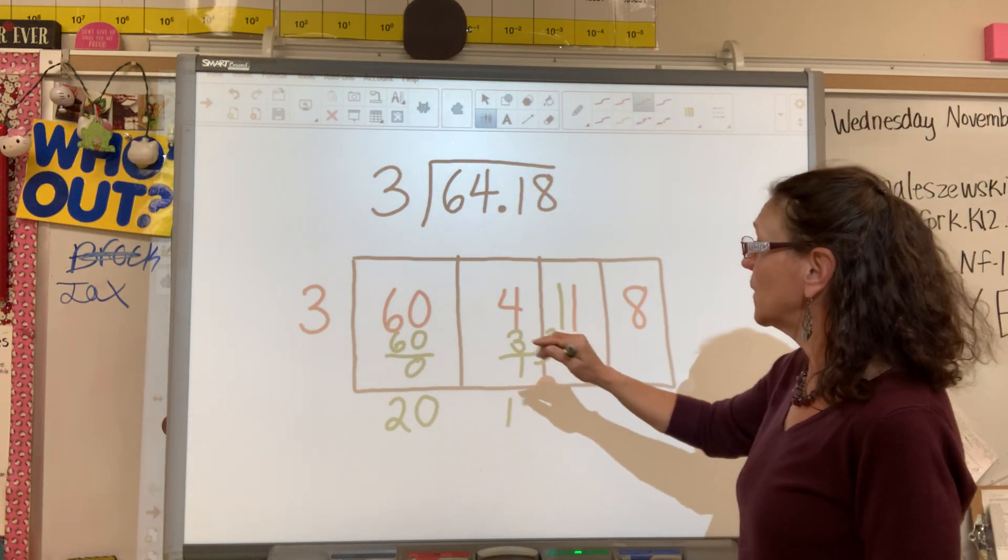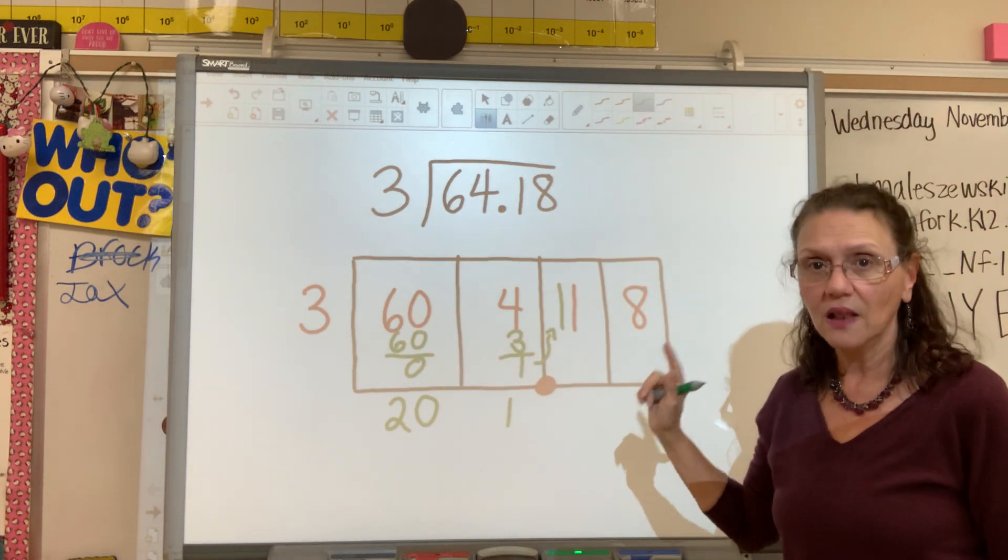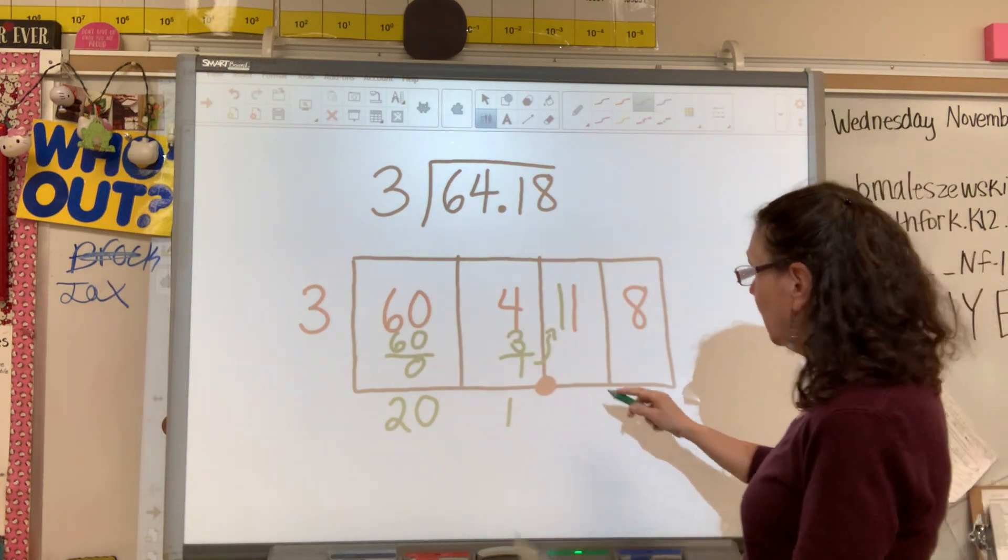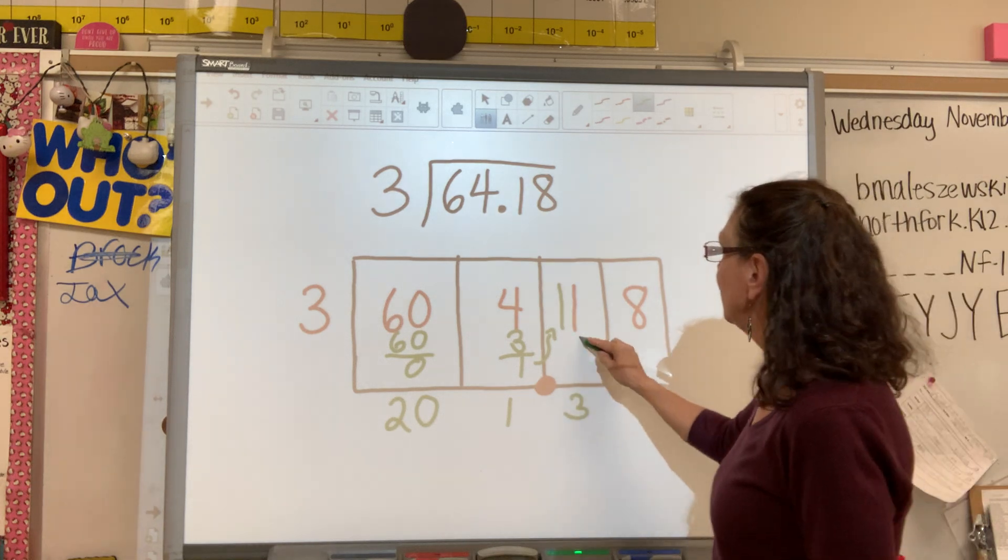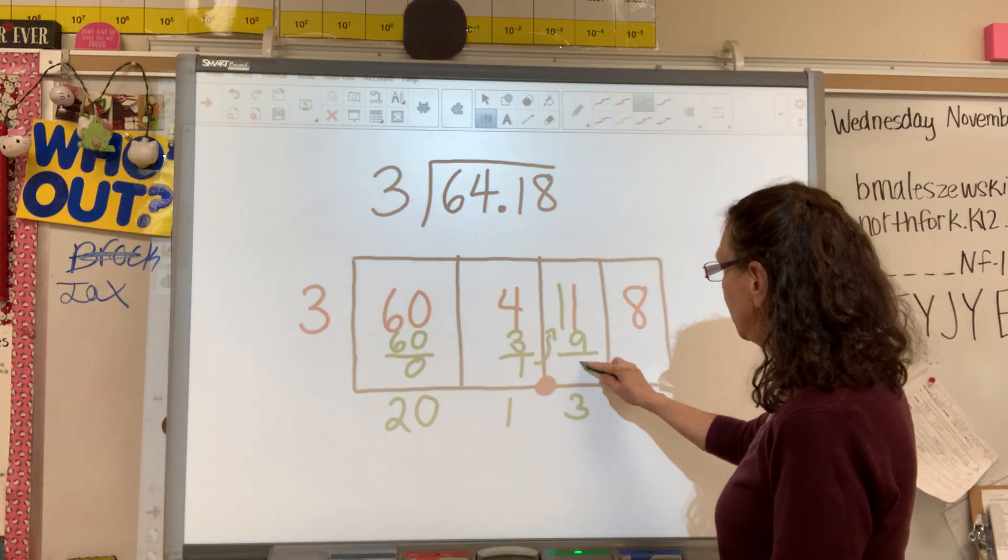So now I ask myself, how many times does three go into 11? Not two, 11. It goes in three times. I put my three down here. Three times three is nine. I subtract. 11 take away nine is two.